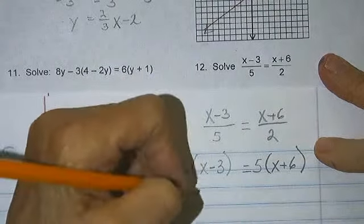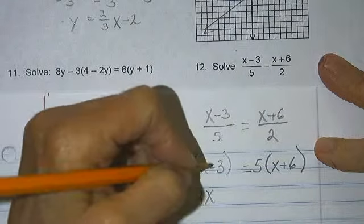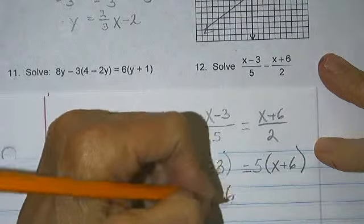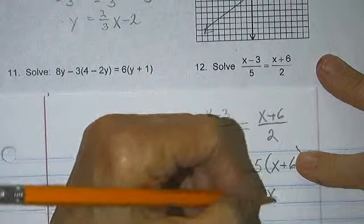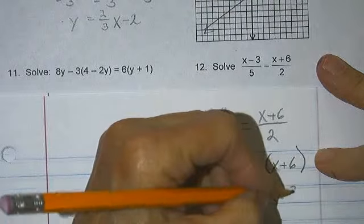2 times x is 2x. 2 times negative 3 is negative 6, is equal to 5 times x is 5x, 5 times 6 is 30.